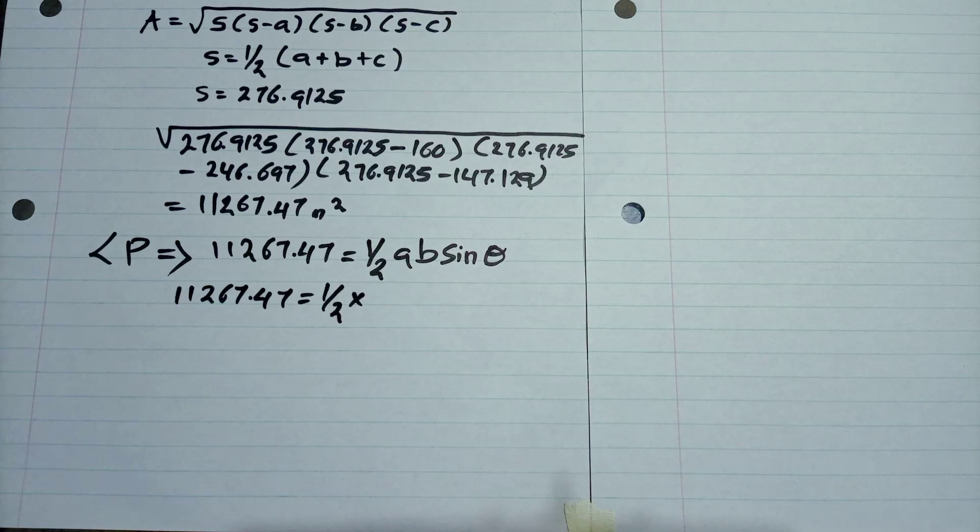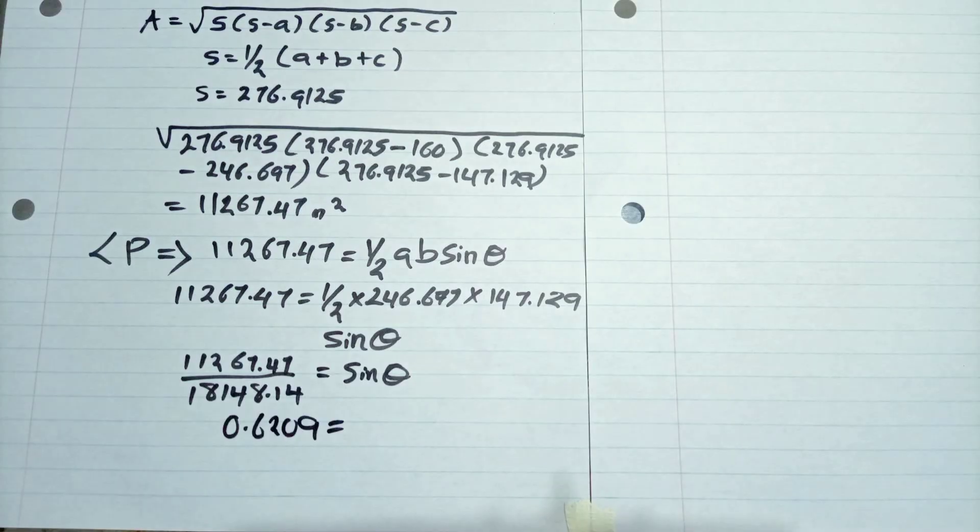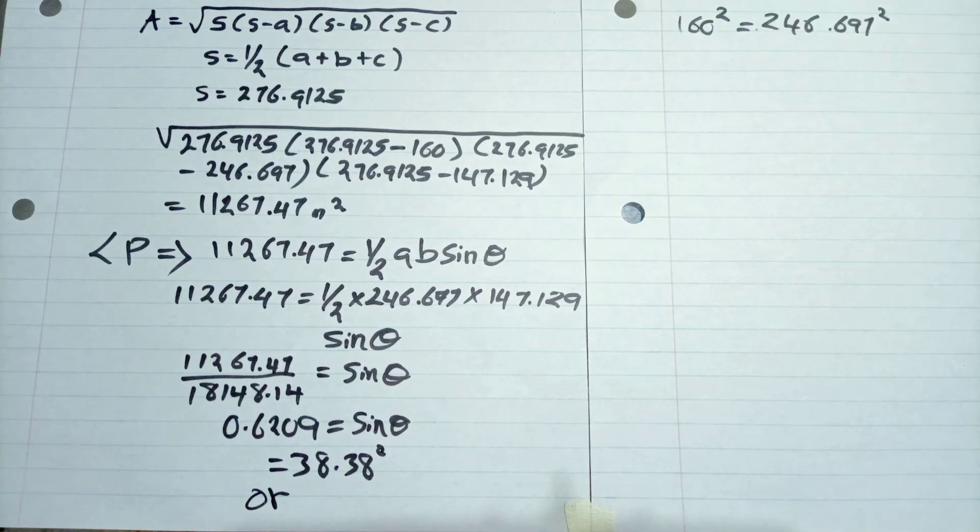Now we go to find the angle for P by equating it to a mathematical equation. So the total area will be equal to A times B times sine theta, and we get our answer as 38.38 degrees.